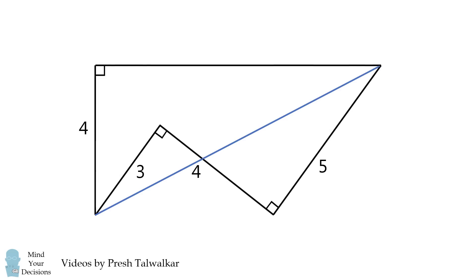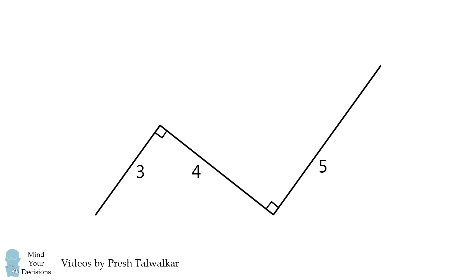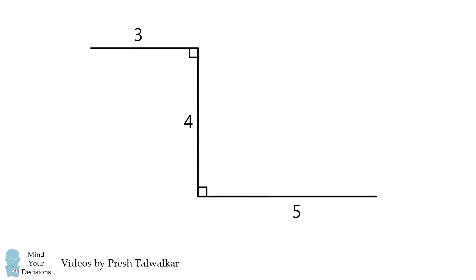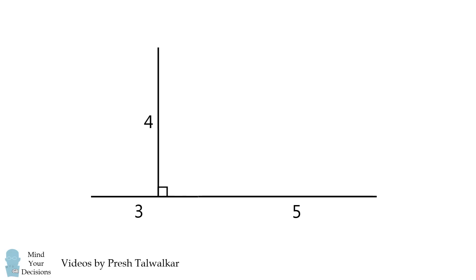Now, let's connect these two points. We're going to figure out this distance, but how can we do that? Well, let's focus just on these three sides. Now let's rotate them, so it'll be a little easier to understand the distance between the two endpoints. I'm going to join the 3 side with the 5 side, and then I'm going to bring the 4 side to the left.